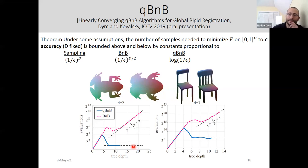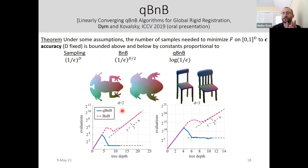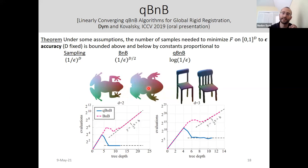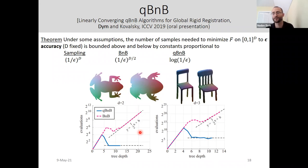Near a minimum, the function changes quadratically. If your bound is linear in the diameter, the cubes near a minimum are very difficult to discard because the function changes much less than the bound predicts. But if your bound is quadratic in the diameter, you're at the right rate — up to a multiplicative constant. This stabilizes the number of evaluations needed as accuracy increases.